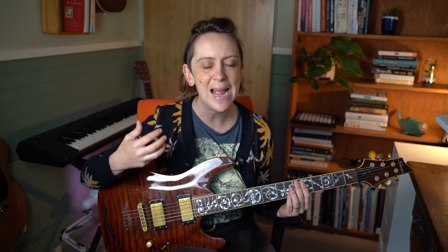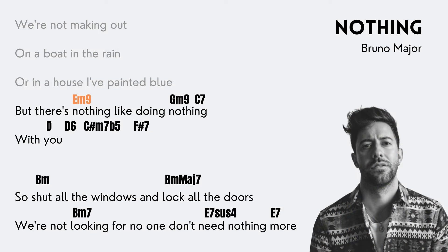Line clichés are a really beautiful sound to inject into a bridge because they add an element of chromaticism — a flash of color that's outside the key while still holding a chord that's in the key. So you get the best of both worlds: something inside the key and something outside the key. Let's have a listen to the bridge of the song Nothing by Bruno Major, which is exactly in the key of D major. When we get to the bridge, it goes into the relative minor — calling back to strategy one — but the thing I want you to hear is the line cliché. [Bruno Major excerpt] Line cliché is really pretty.